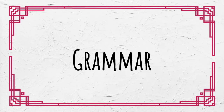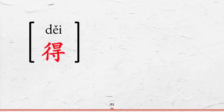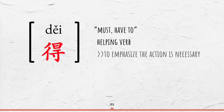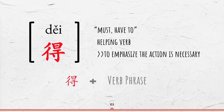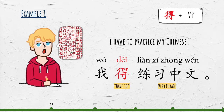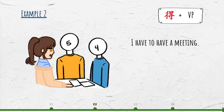Now let's move on to the grammar. 得 means must or have to. It is a helping verb that is placed before a verb phrase to emphasize that the action is necessary. The structure is 得 plus verb phrase. For example, I have to practice my Chinese: 我得练习中文.